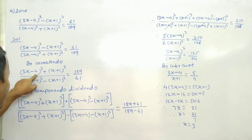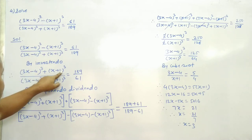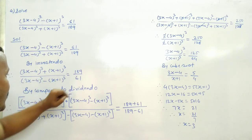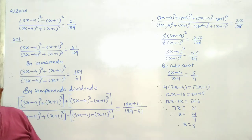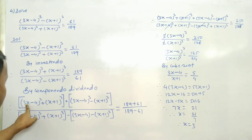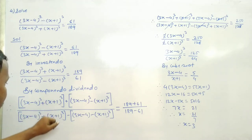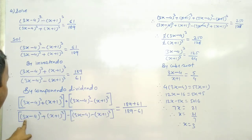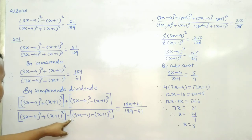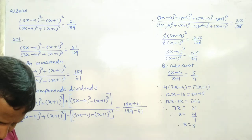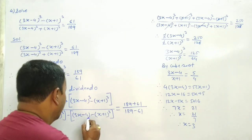Inverting: (3x-4)³ plus (x+1)³ divided by (3x-4)³ minus (x+1)³ is equal to 189 divided by 61. Applying componendo-dividendo: (3x-4)³ plus (x+1)³ and (3x-4)³ minus (x+1)³ terms are separated.